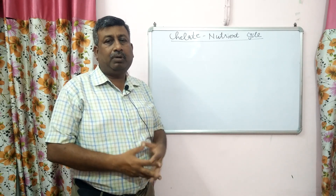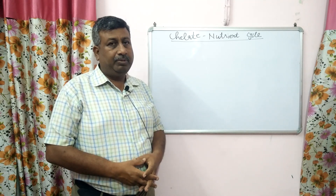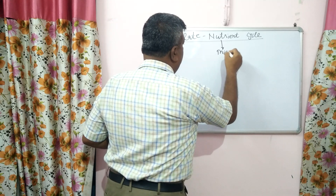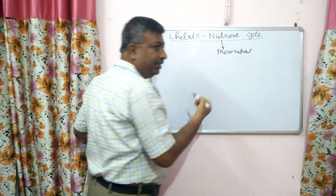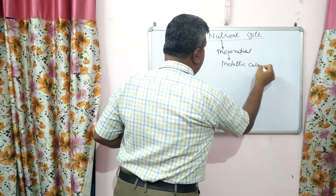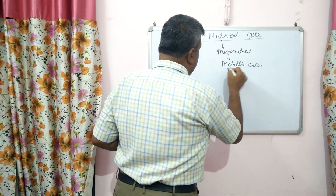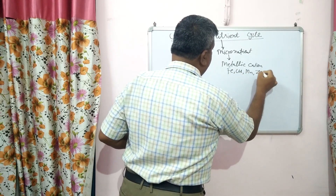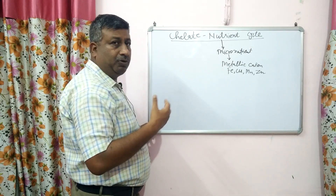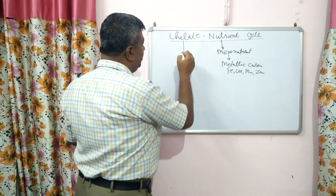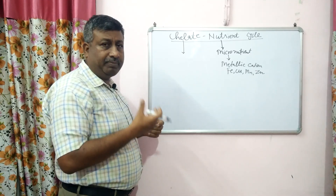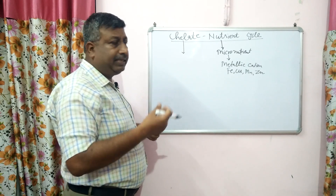This cycle is very important if we talk about nutrient availability. It helps in increasing nutrient availability, particularly for micronutrients — specifically the metallic cations. Metallic micronutrients available through this cycle are Fe, Cu, Mn, and Zn. So chelates increase the availability of particularly these four metallic cations: iron, copper, manganese, and zinc. Chelates are complex organic compounds which make a bond with these micronutrients and increase their availability.